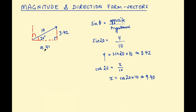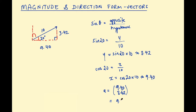The numbers aren't the neatest, but the column vector for vector a is (9.40, 3.42) — the top number is the horizontal distance and the bottom is the vertical. Both are positive because we're going in the positive directions. You can also write this in ij notation as 9.40i + 3.42j.